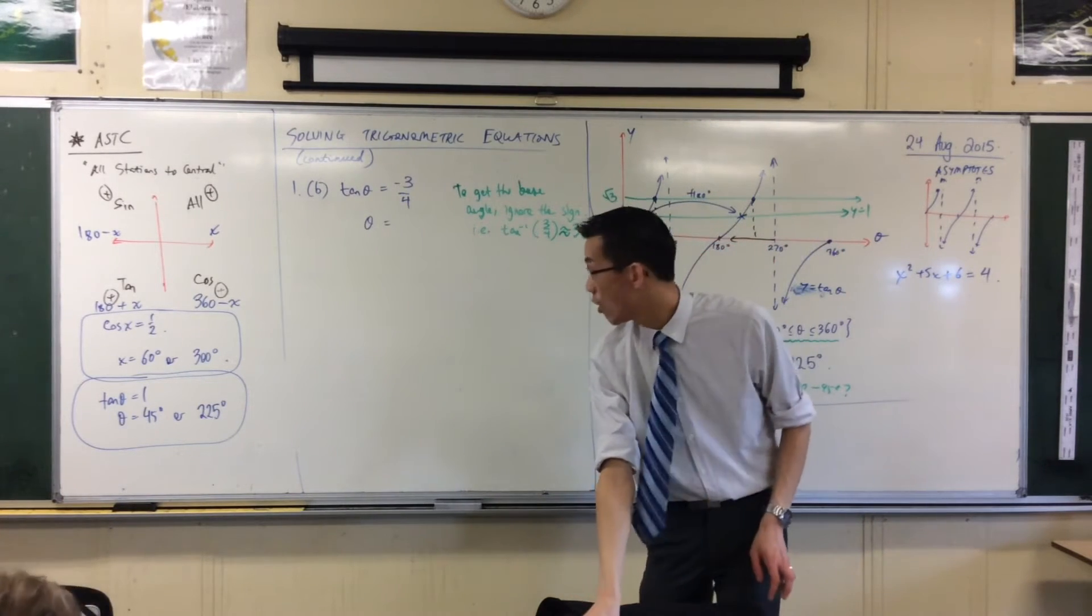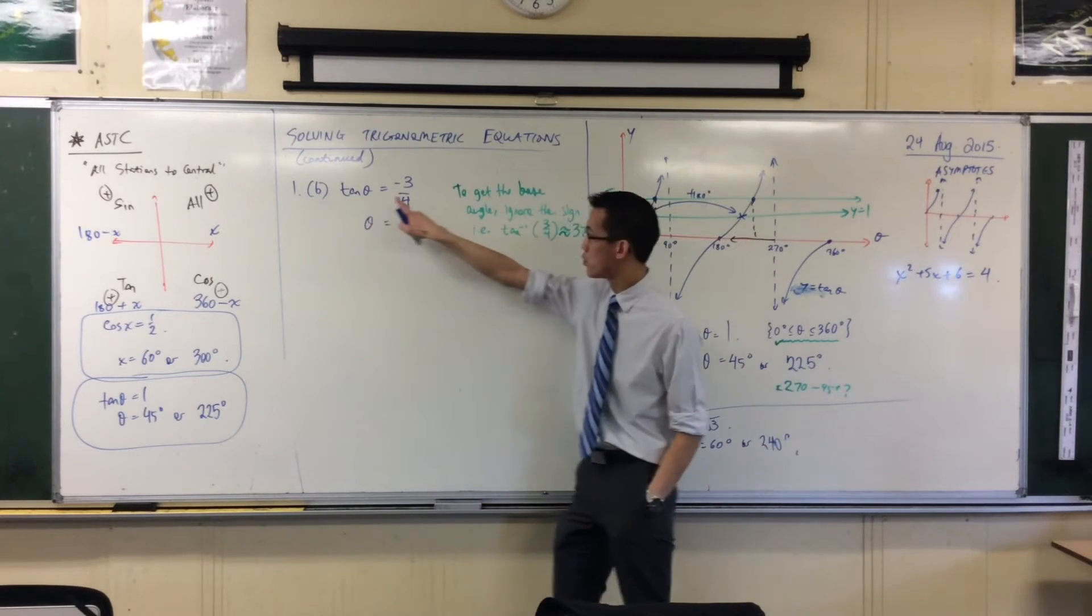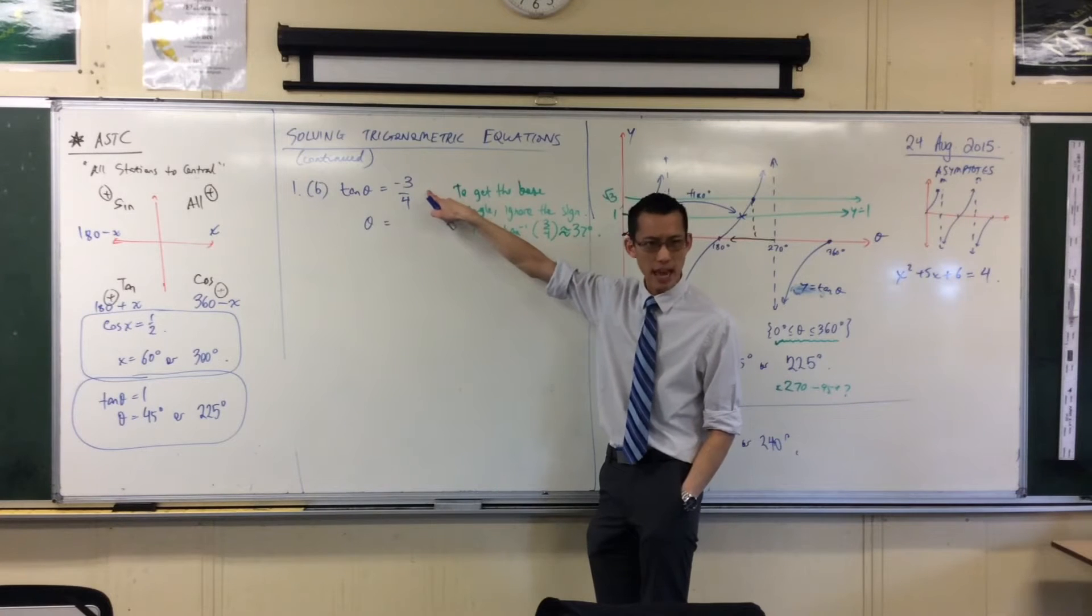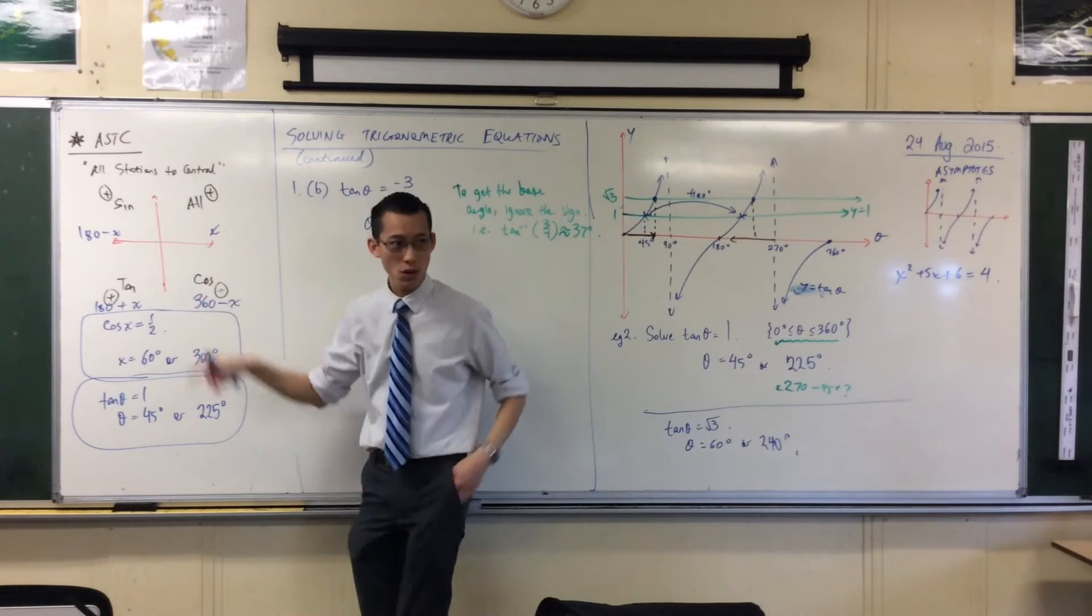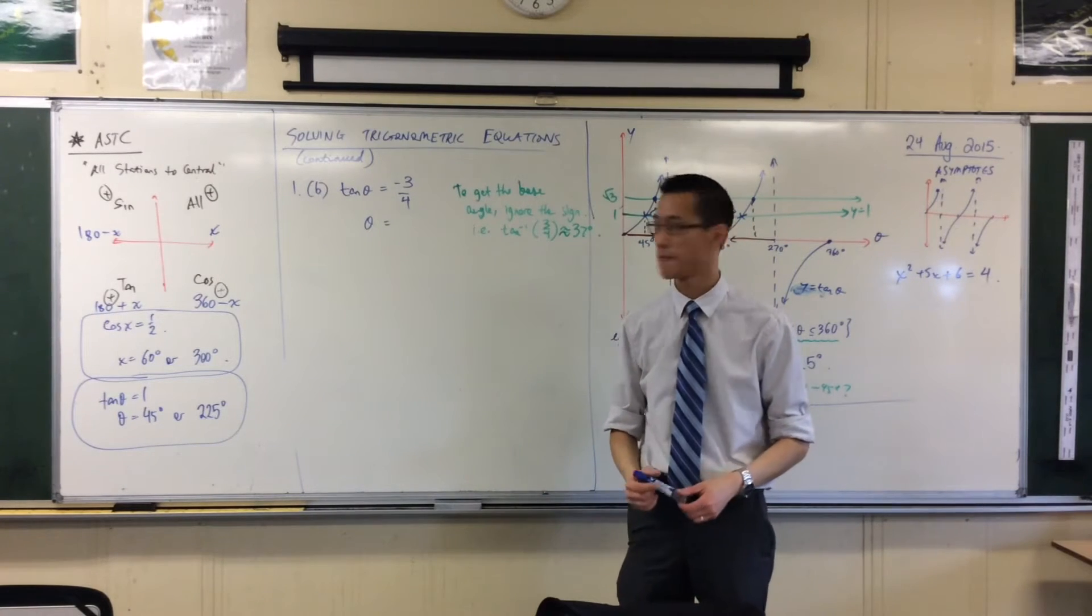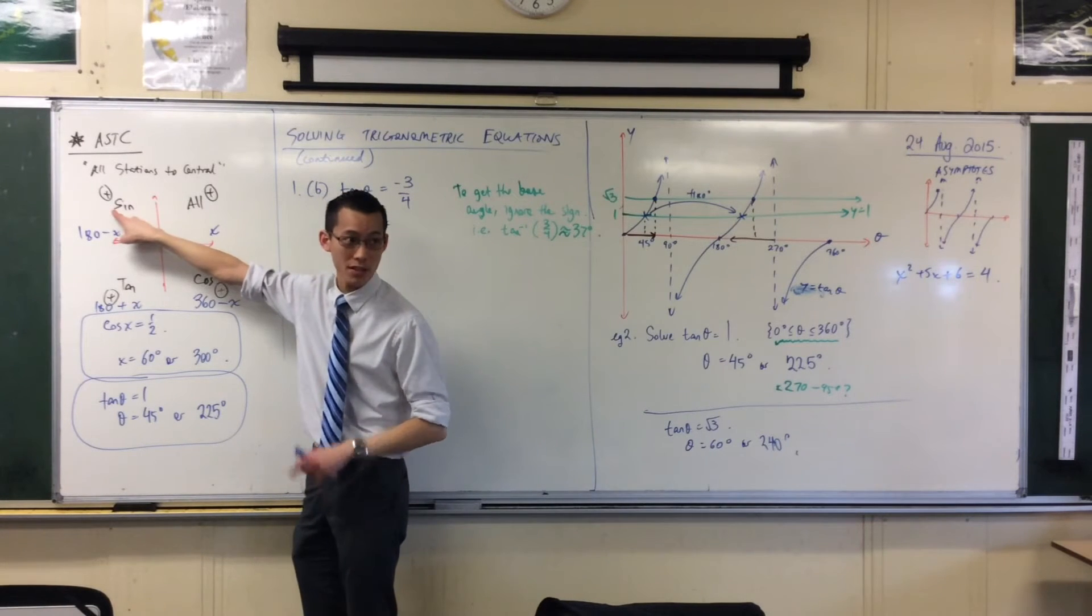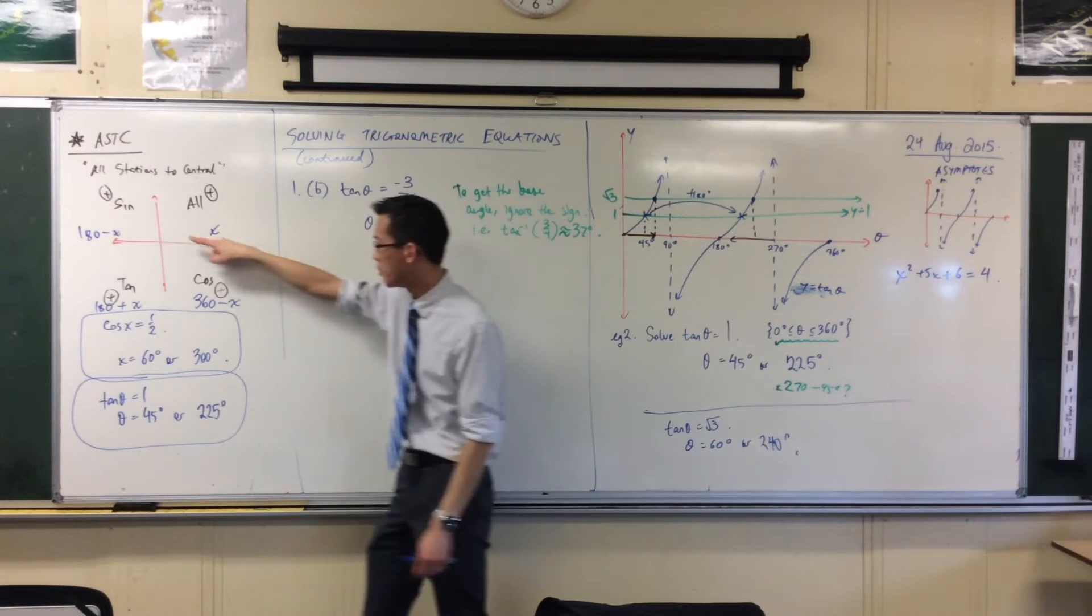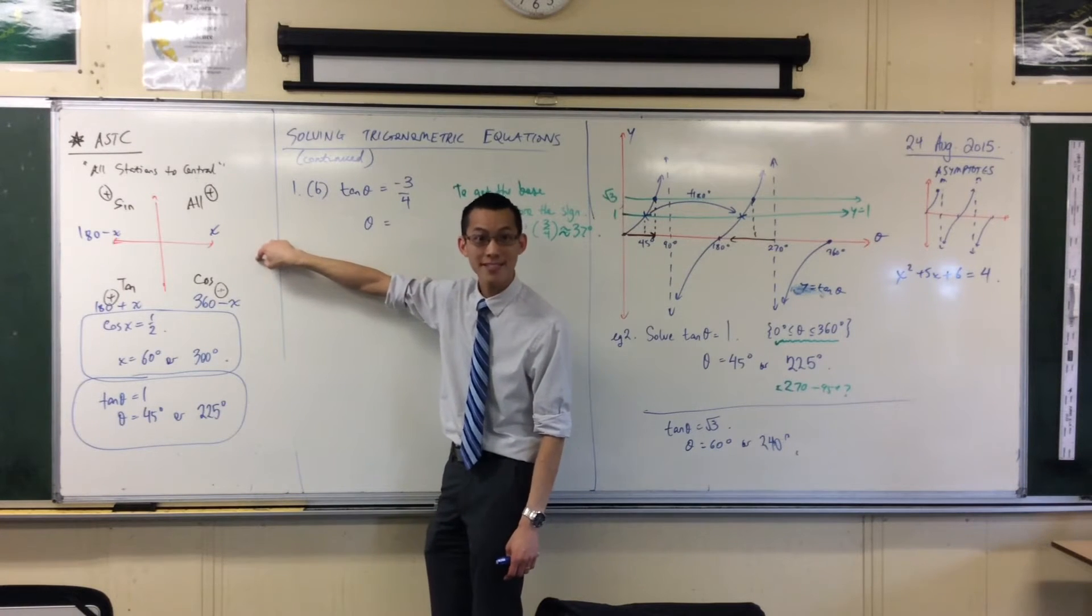Now, you look and you say, hold on a second. I want tan to be negative. Tan to be negative. So, when I look at all stations 2 central, in which of the quadrants out of the 4, where is tan negative? 2. It's going to be negative over here, because sine is positive, so tan will be negative. And it will be negative over here. You see that? Because cos will be positive.